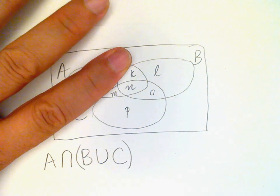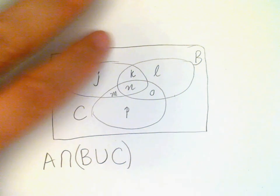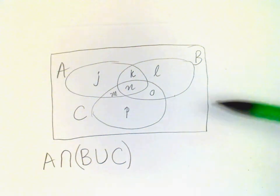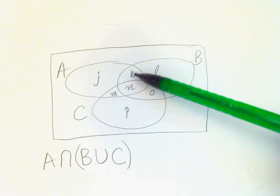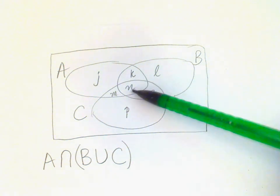And then the intersection of that with A is where the B union C overlaps with A. And so that would be K, M, and N.